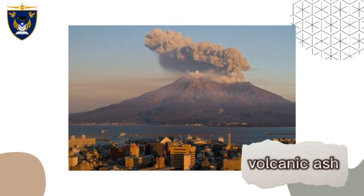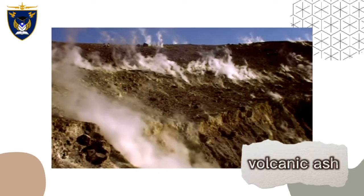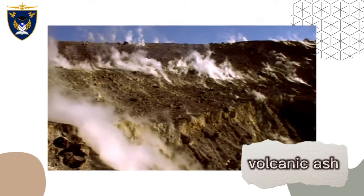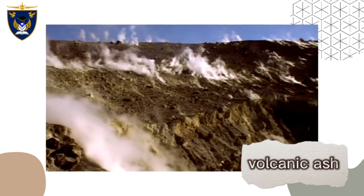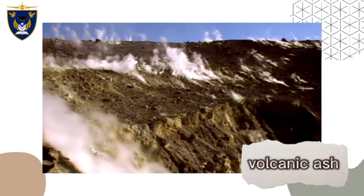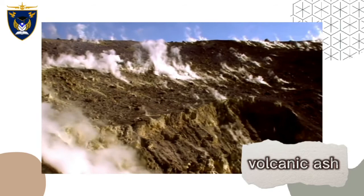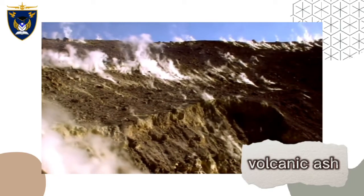Modern jet aircraft and engines are designed to operate in environments free from dust and corrosive gases. Volcanic ash is hard and abrasive and can quickly cause significant wear to propellers and turbo compressor blades, and scratch cockpit windows, impairing visibility.